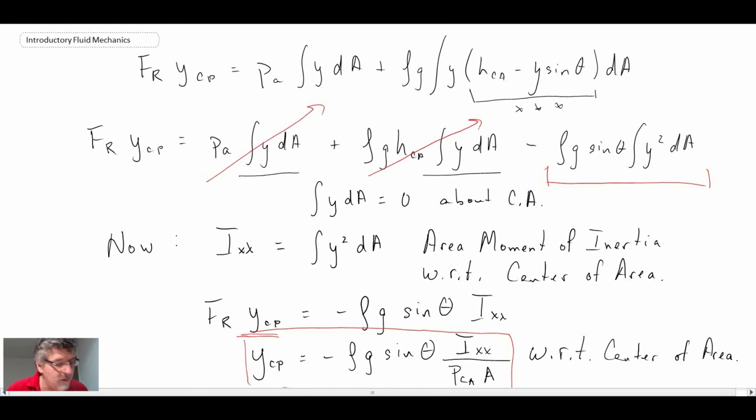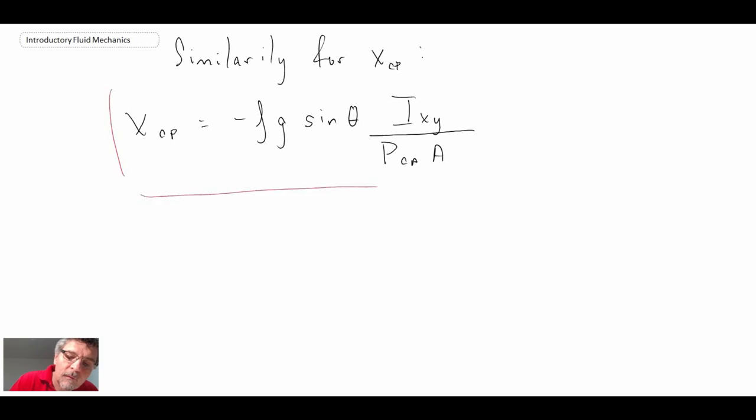So that's the y-coordinate. Now let's continue on to try to find the x-coordinate. And for that I'm just going to give you the result. So we have this expression here and I_xy, again it's the area moment of inertia, and this is with respect to center of area.